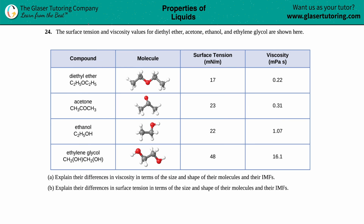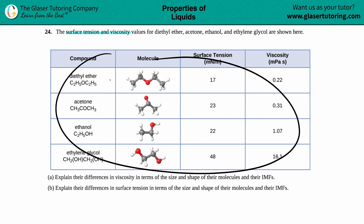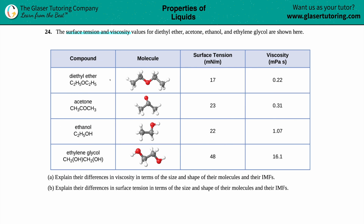Number 24. The surface tension and viscosity values for diethyl ether, acetone, ethanol, and ethylene glycol are shown here in this chart. For letter A, explain their differences in viscosity in terms of the size and the shape of their molecules and their intermolecular forces.